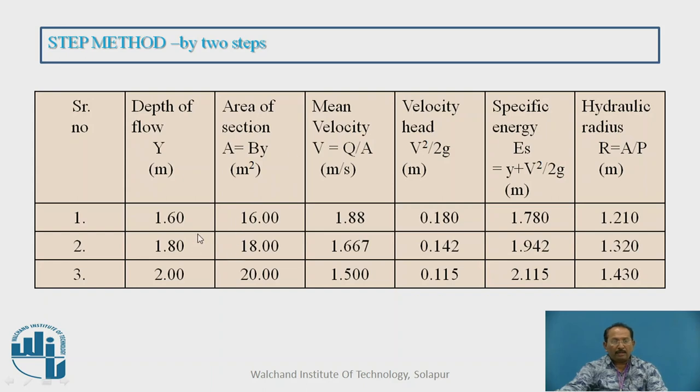Now area of the section, that is 10 m wide, so 1.6 into 10, that is 16, 1.8 into 10, 18, 2 into 10, 20, like this. Velocity V is equal to Q upon A, if we have calculated this one, then velocity head or kinetic head that is V square upon 2g. Specific energy is nothing but the depth of water plus kinetic head, this we have calculated. The hydraulic radius, R is equal to A by P, area upon wetted perimeter, that is calculated 1.21, 1.32 and 1.43 is hydraulic radius.